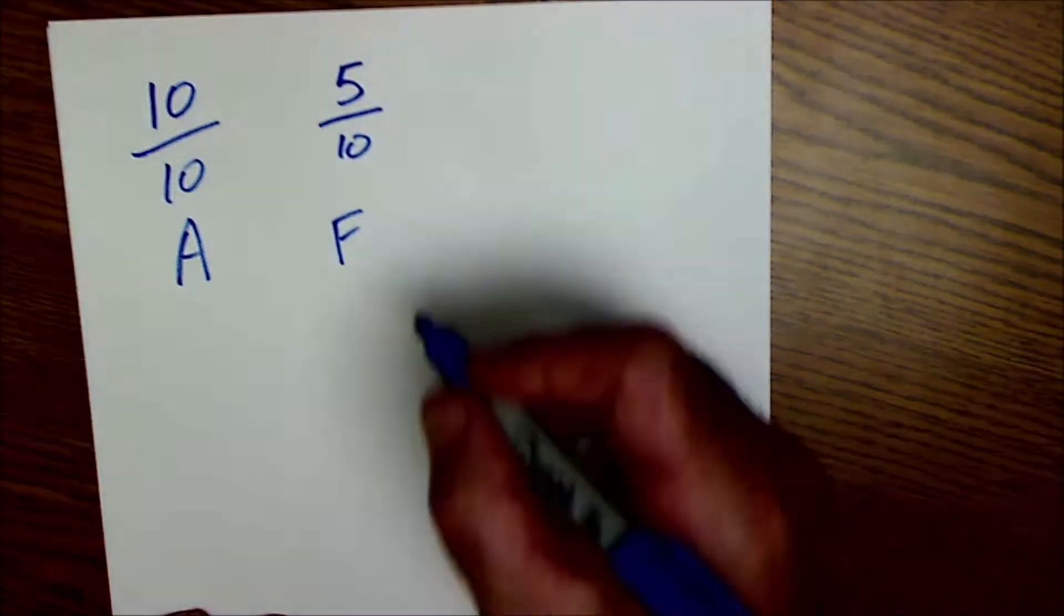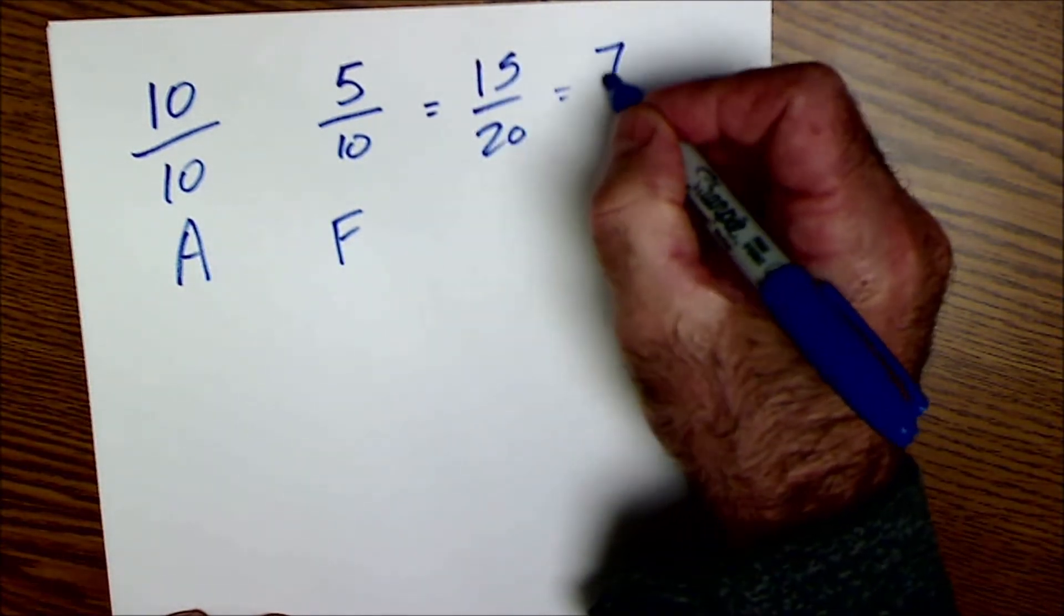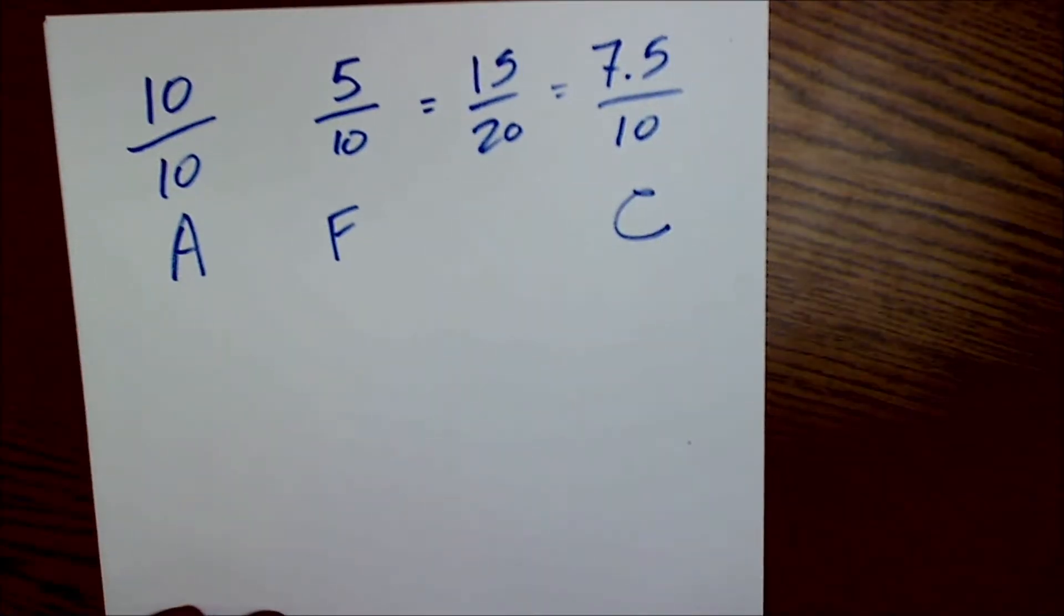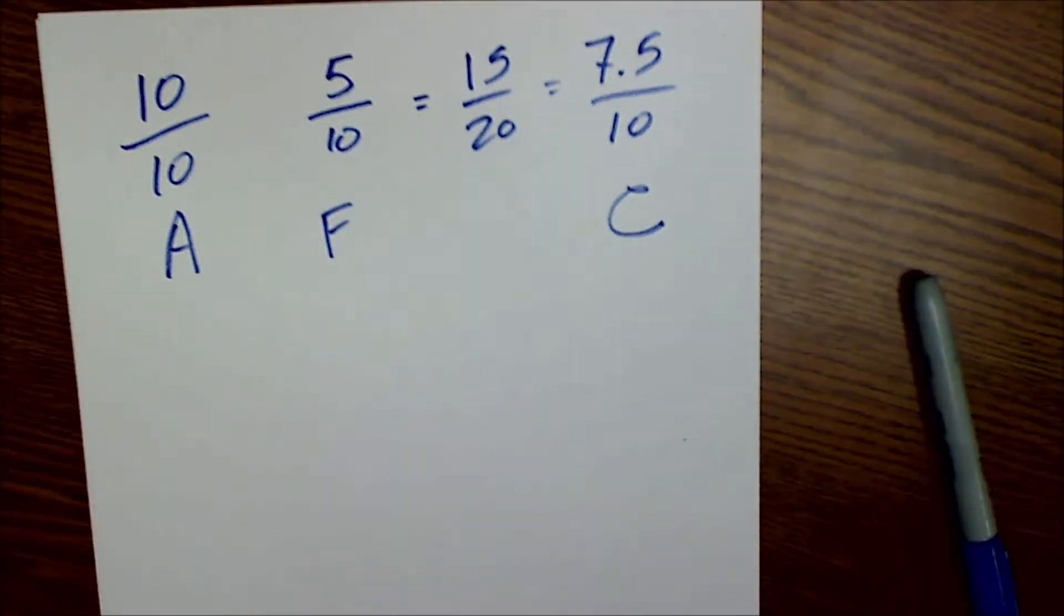I'm going to average those two grades out. I add them together: 15 out of 20. That averages out to 7.5 out of 10, which is a C. So first scenario: A on the first quiz, F on the second quiz, averages to a C.